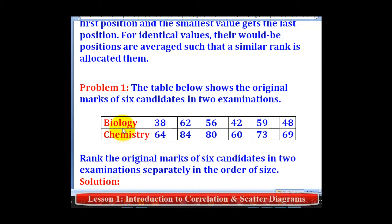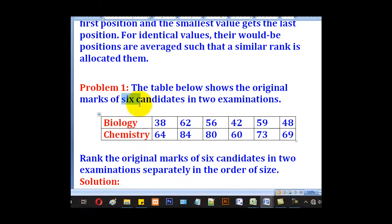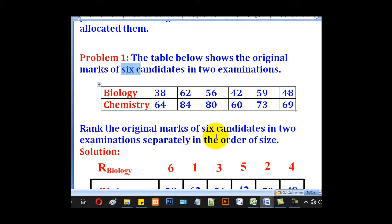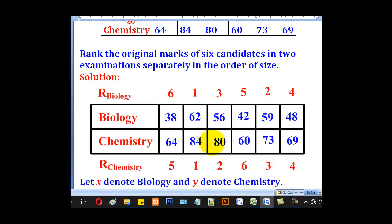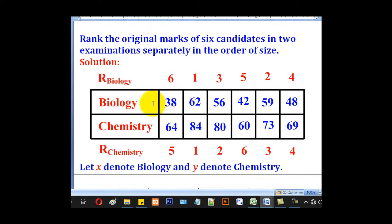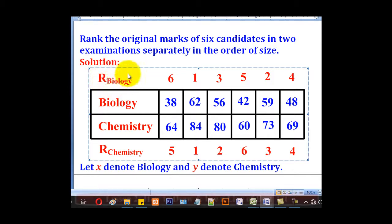Problem 1: we are given a table having marks of biology and chemistry for 6 candidates, and they want us to rank the original data separately in order of size. This would be the table — these are the marks of biology, marks of chemistry, and this column denotes the rank of biology.